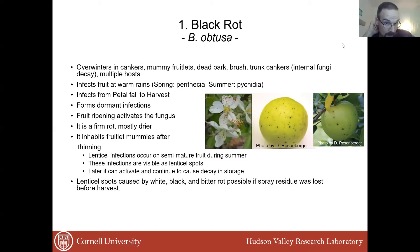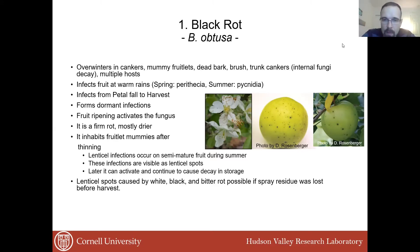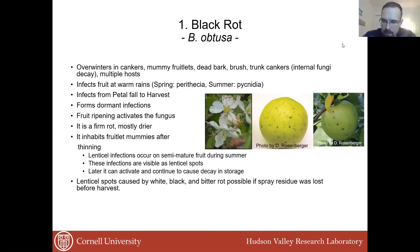Thinning can contribute to formation of mummies, which this pathogen inhabits. Sometimes you can have lenticel issues — infections from this pathogen on semi-mature fruit during the summer — that some people actually mix up with other causes of damage, such as phytotoxicity and lenticel breakdown issues. These lenticel spots are sometimes deceiving, but in some cases they are actually black rot. If fungicide coverage is not maintained, these can continue to develop and decay in storage. Lenticel spots can be caused not only by black rot, but also by the white rot fungus, which I will talk about next, and in very rare cases, bitter rot fungi from the Colletotrichum genus can cause those small spots. It is always difficult to diagnose those spots and pinpoint a direct cause.